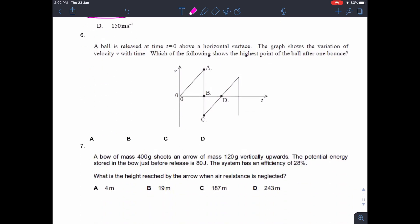Question 6. A ball is released at time t equals zero above a horizontal surface. The graph shows the variation of velocity with time. So we're looking for the highest point of the ball after one bounce. So where is the bounce? Well, first of all, it starts here, and here the velocity is increasing. So you assume that it's moving downwards. So this is down, and this is up. So if it's moving downwards, the velocity is positive, and if it's moving upwards, the velocity is negative.